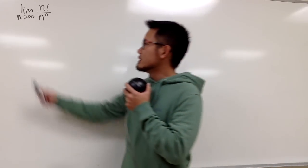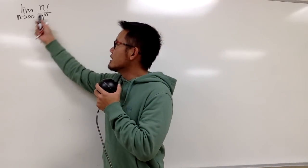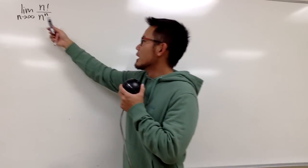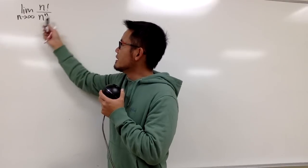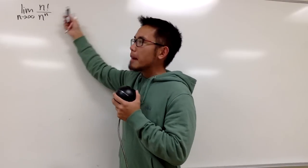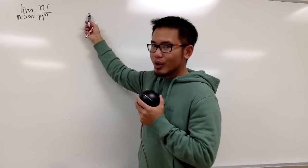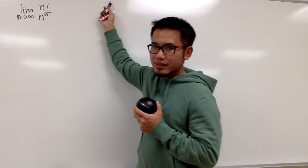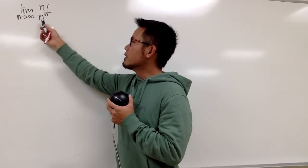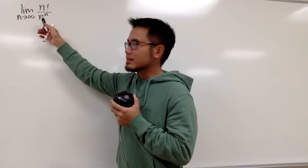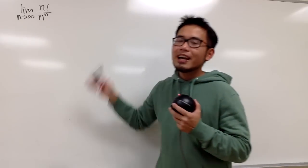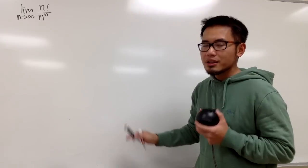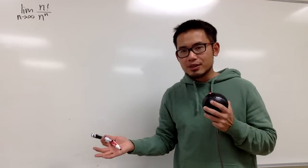We are going to find the limit as n goes to infinity of n factorial over n to the nth power. Let's do the check — plug in infinity. On the top we will have infinity factorial, and on the bottom we will get infinity to the infinity power. This is an infinity over infinity situation, and we know that's indeterminate.